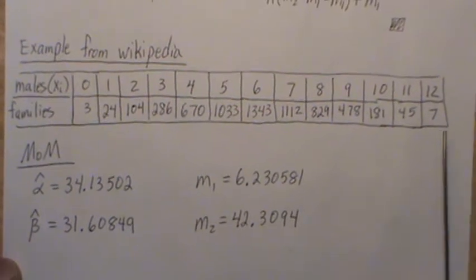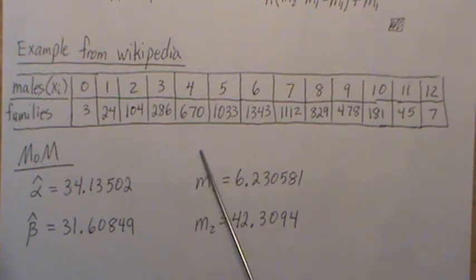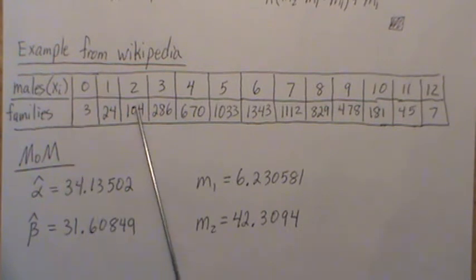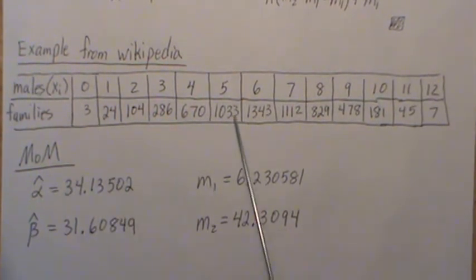Now, the example that they gave on Wikipedia, and I'm going to use this because I'm going to calculate the maximum likelihood estimates for the beta binomial, and then I'm going to illustrate this in our program over the next couple of videos. But the example they provided on Wikipedia is they look at families that had 12 kids, and then they count the number of male children that the family had. And this is it. So this is the distribution.